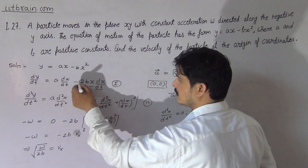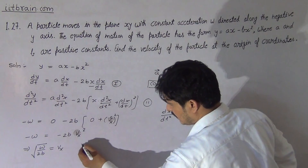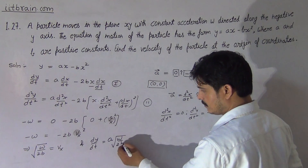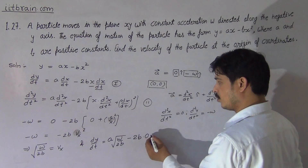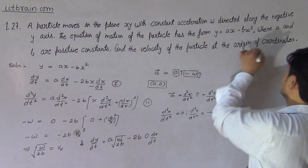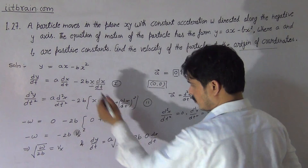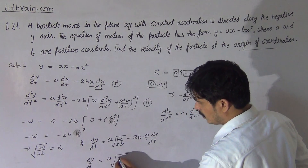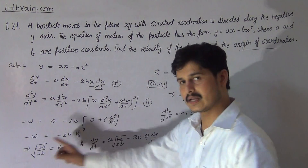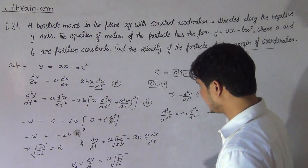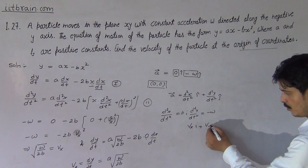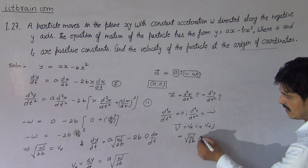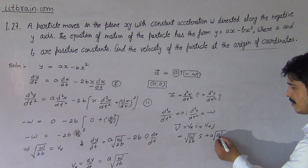Substituting the value of vx into the first equation, we get dy/dt = a·(dx/dt) - 2bx·(dx/dt). Since the calculation is at the origin, x = 0, so dy/dt = a·√(ω/2b). Thus vy = a·√(ω/2b). The complete velocity vector is v = vxî + vyĵ = √(ω/2b)î + a√(ω/2b)ĵ.